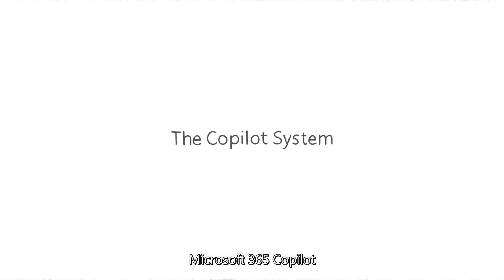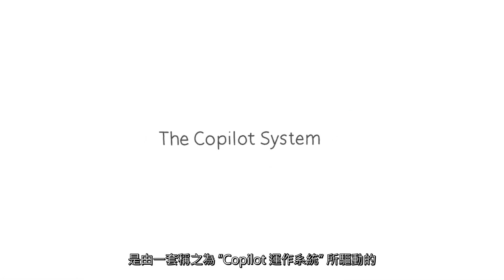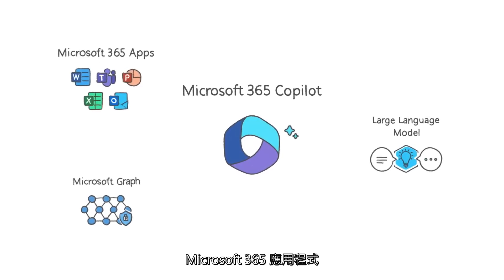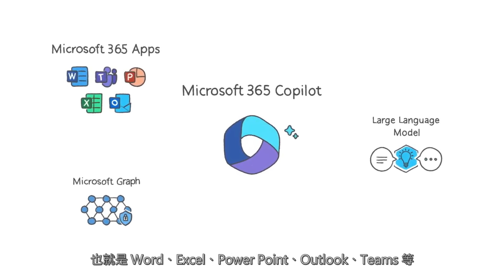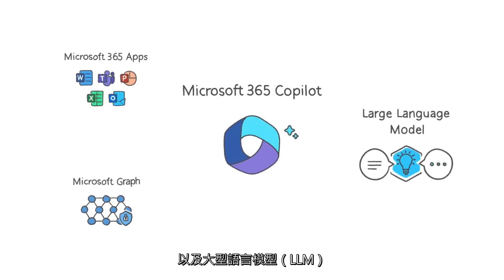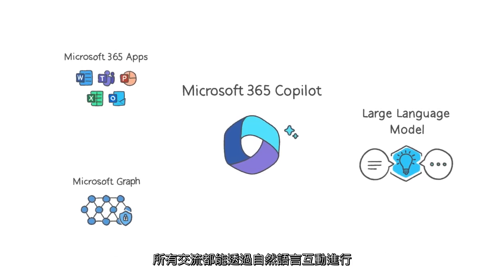Microsoft 365 CoPilot is powered by what we call the CoPilot system, a sophisticated processing and orchestration engine. It harnesses the power of three foundational technologies: the Microsoft 365 Apps — that's Word, Excel, PowerPoint, Outlook, Teams, and more; the Microsoft Graph, that's all your content and context — your emails, files, meetings, chats, and calendar; and a large language model, or LLM, a creative engine capable of parsing and producing human-readable text, all accessible through natural language.